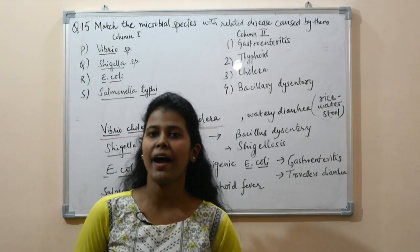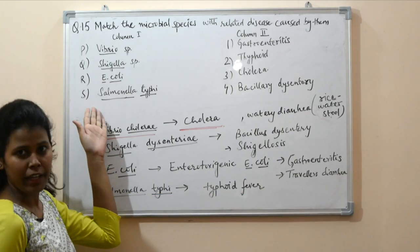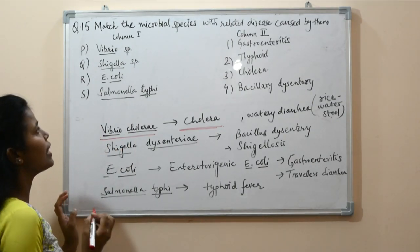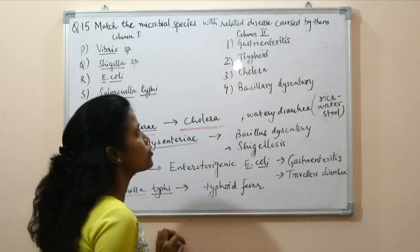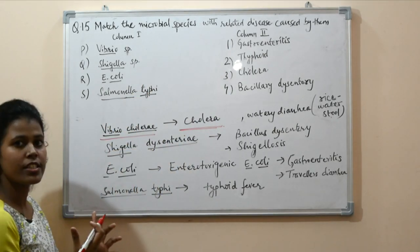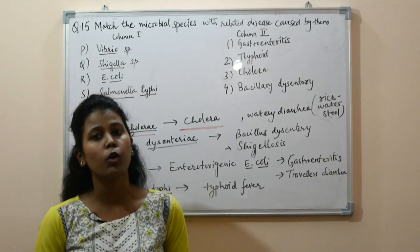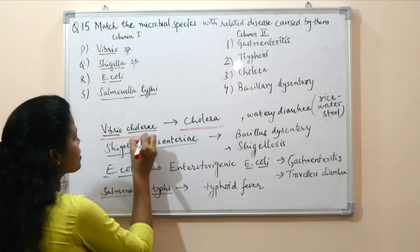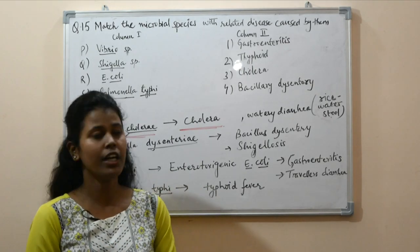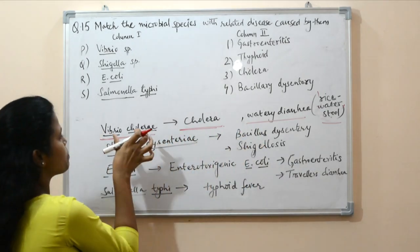Question number 15: match the microbial species with the related disease. Column 1 has Vibrio species, Shigella species, E. coli, and Salmonella typhi. Column 2 has gastroenteritis, typhoid, cholera, and bacillary dysentery. Vibrio cholerae releases the cholera toxin — a protein causing profuse watery diarrhea, commonly called rice water stool. So Vibrio species causes cholera.